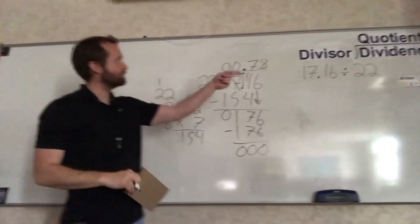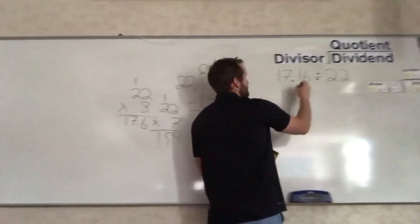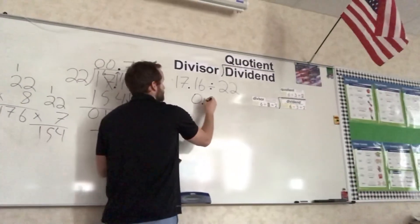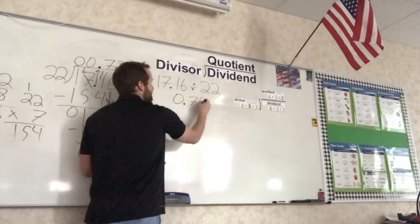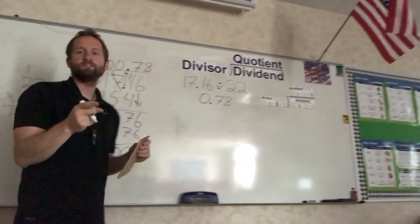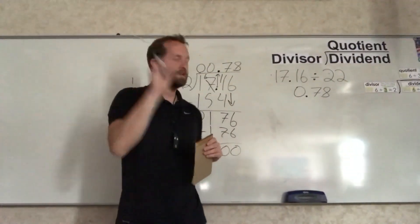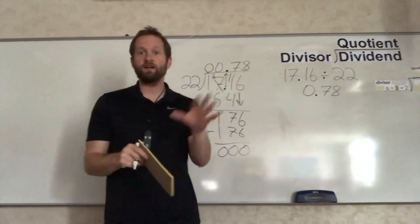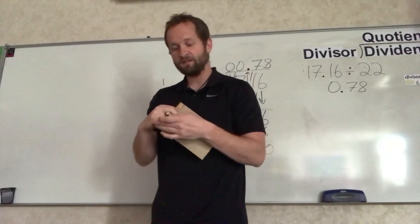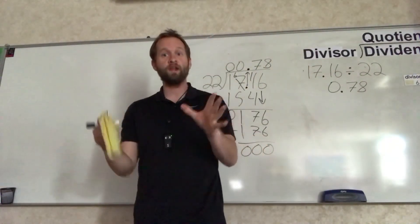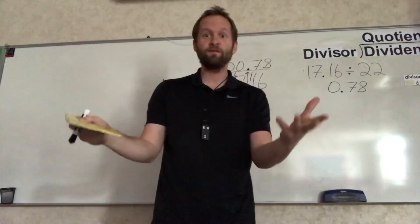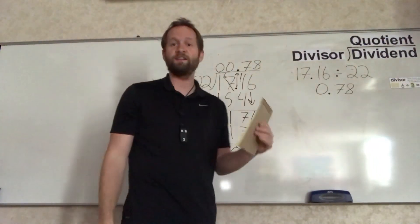So 17.16 divided by 22 equals 0.78, or 78 hundredths. Good luck on this today. We've got some problems for you to do. Finish those and turn that in. You guys are doing great. It's exciting to hear from you guys. Good luck and keep working on this.